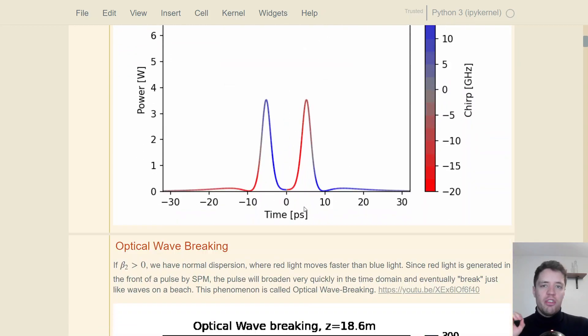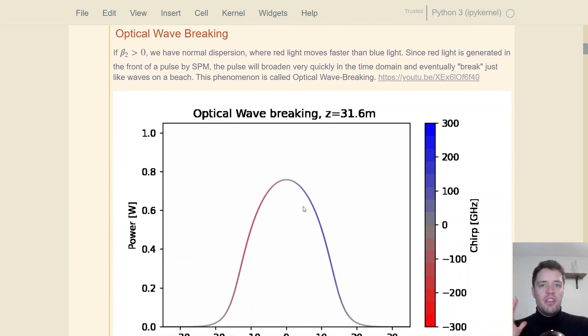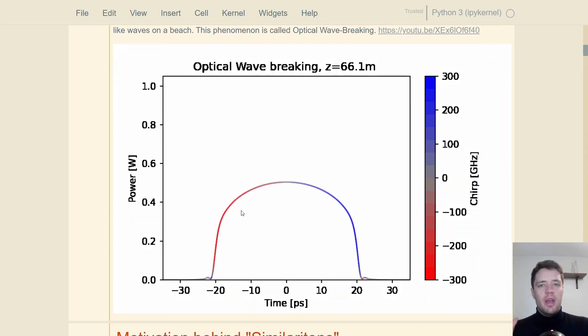Now, we also investigated in a different video something called optical wave breaking. In that situation, we basically have the same type of fiber as for the soliton, except the beta-2 dispersion parameter is now positive. So what happens here is that the presence of the nonlinearity is going to generate a red chirp on all leading slopes of pulses and a blue chirp for all the trailing slopes. And because beta-2 is positive, it means that red light propagates faster than blue light. So in total, that's going to cause the pulse to basically break apart and spread out, as we're seeing in this present animation right here.